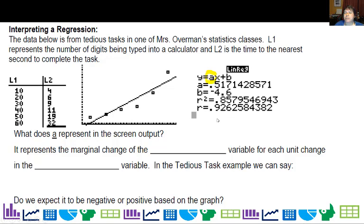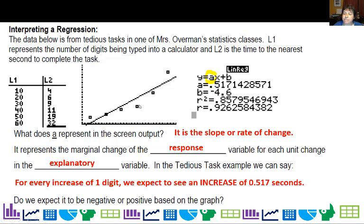So what does A represent on the screen output? That is actually the coefficient of x, so that is the slope or rate of change, and it represents the marginal change of the response variable for each unit change in the explanatory variable. In this example, we can say that for every increase of one digit, we expect to see an increase, because slope is positive, of 0.517 seconds. Do we expect it to be negative or positive based on the graph? We expect it to be positive because it's increasing, so that looks like a positive slope.